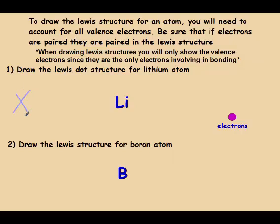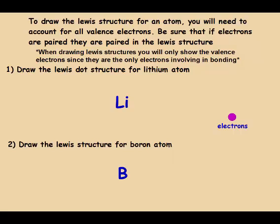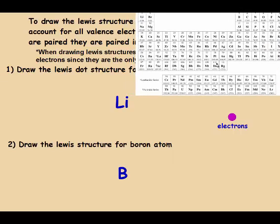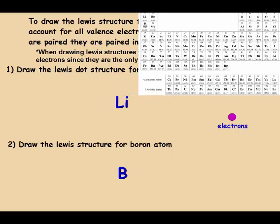For instance, if we had some element X, the first two electrons get paired, and then the remaining electrons are placed one on each side — three, four, five, six, seven, eight. So lithium is in the first column, so it has one valence electron, which means it should have just one dot.